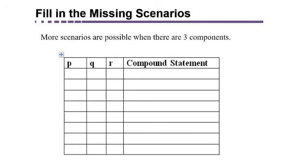So let's look at which scenarios are possible when there are three components. We already know that there's two to the third equals eight rows, but what are in those rows? Remember, each row represents a possible scenario. Half of those scenarios, P will be true and half of those scenarios, P will be false. Same thing goes for Q, but you can't just write true, true, true, true, false, false, false, false, because then you'd have repeated scenarios.